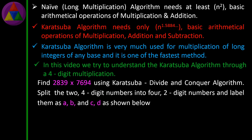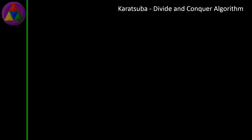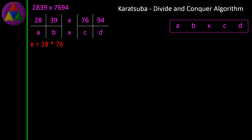Find 2839 × 7694 using the Karatsuba divide and conquer algorithm. Split the two four-digit numbers into four two-digit numbers and label them as A, B, and C, D as shown below. 2839 × 7694 divided into four parts: A, B into C, D. E = 28 × 76, because E = A × C.